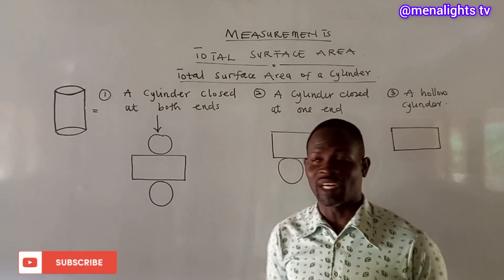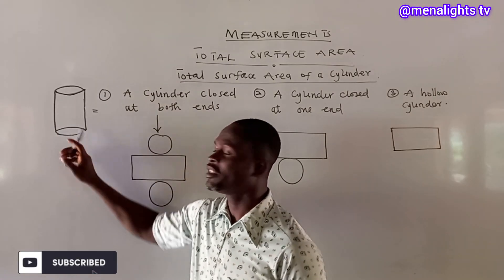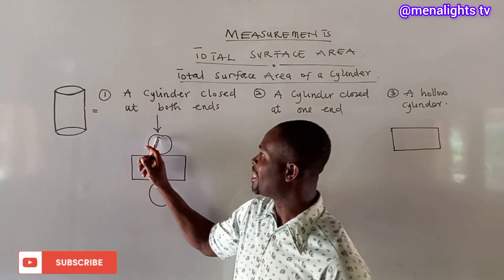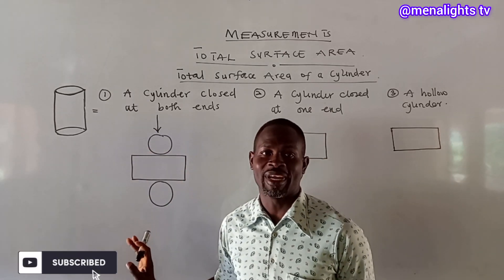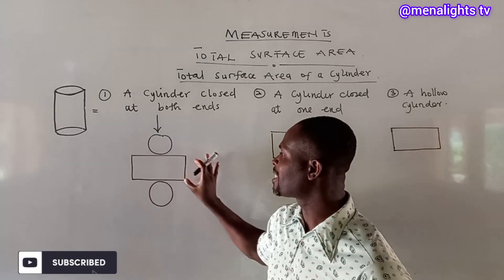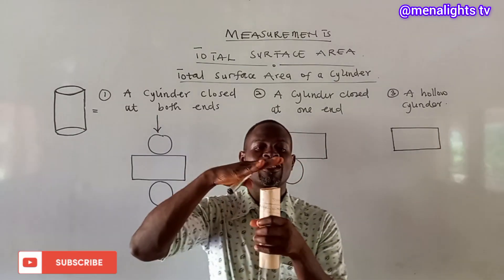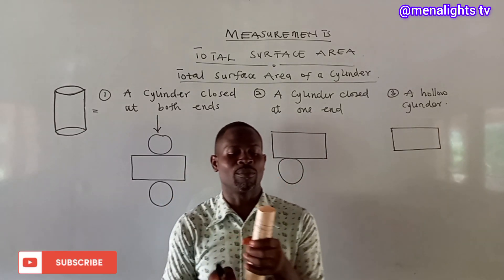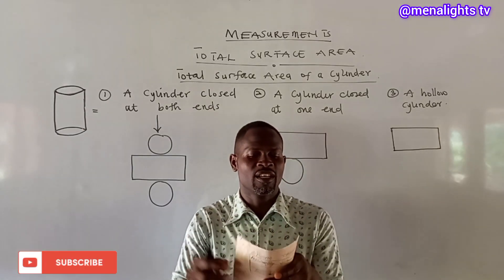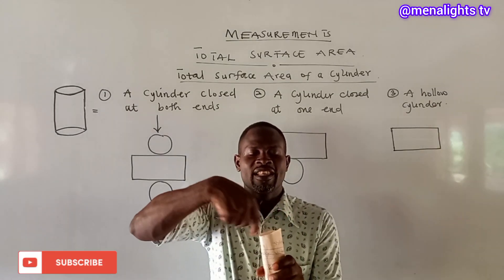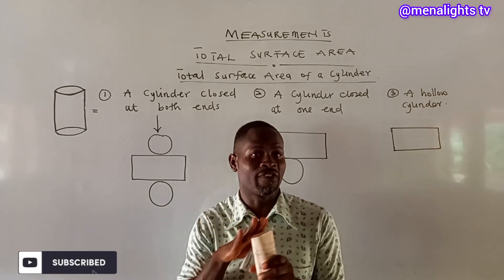When we look at the first type, we have a cylinder closed at both ends. Since it is closed, we have a circular top and a circular base. When you open it, this side becomes the circumference. The distance around this place is the circumference, or the perimeter here is the circumference.